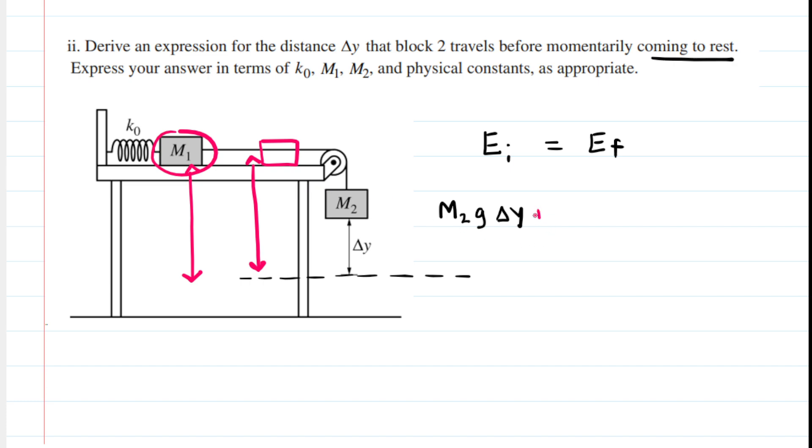So even if we included a term for the initial gravitational potential energy of Block M1, we would have that same gravitational potential energy on the other side, and they would eventually cancel each other out anyways. So you don't need to include anything related to the gravitational potential energy of Block M1, because its initial and final values are going to be the same.